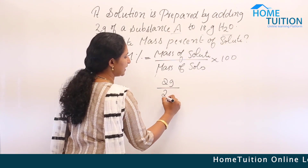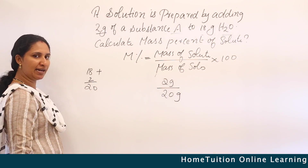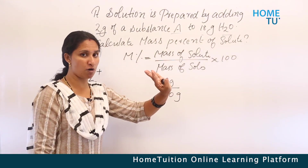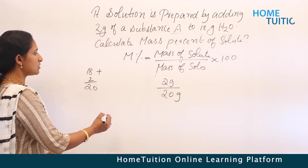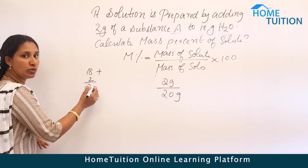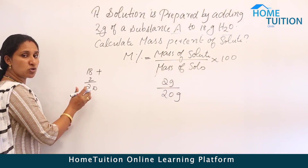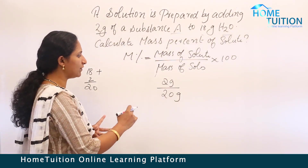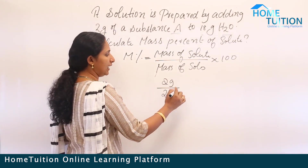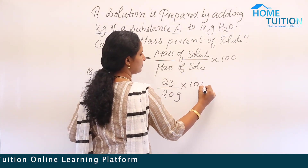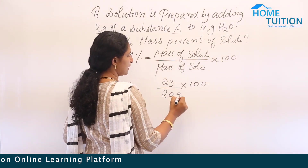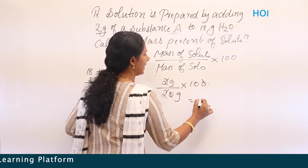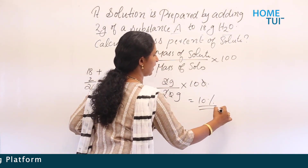The mass of solution is 18 + 2 = 20 grams, not 18. So mass percent equals 2 divided by 20 into 100, giving 10 percent.